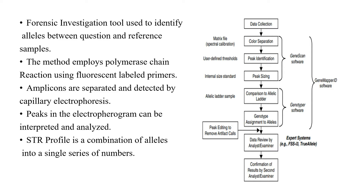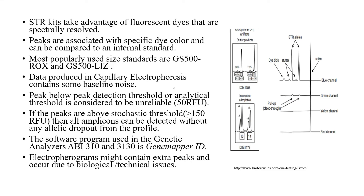There are different steps in capillary electrophoresis, explained here with the help of a flow diagram. The software program used in this process is labeled on the right-hand side and is known as GeneMapper ID software. The STR kits take advantage of fluorescent dyes that are spectrally resolved in a capillary electrophoresis instrument. Each peak is associated with a specific dye color and is compared to an internal size standard. The most popularly used size standards are GS500 ROX, a red fluorescent dye, and GS500 LIZ, an orange fluorescent dye.